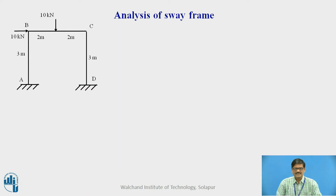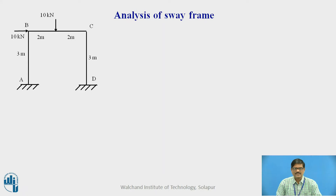Let us consider one example. In this frame, the loading is not symmetric. Even though the support conditions are symmetric and the geometry is symmetric, the loading is not symmetric. Therefore, it will lead to sway. Therefore, the given problem is a sway frame.